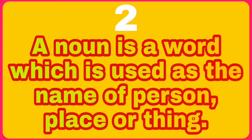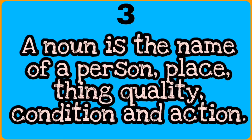The second definition is: a noun is a word which is used as the name of a person, place or thing. I repeat — a noun is a word which is used as the name of a person, place or thing.